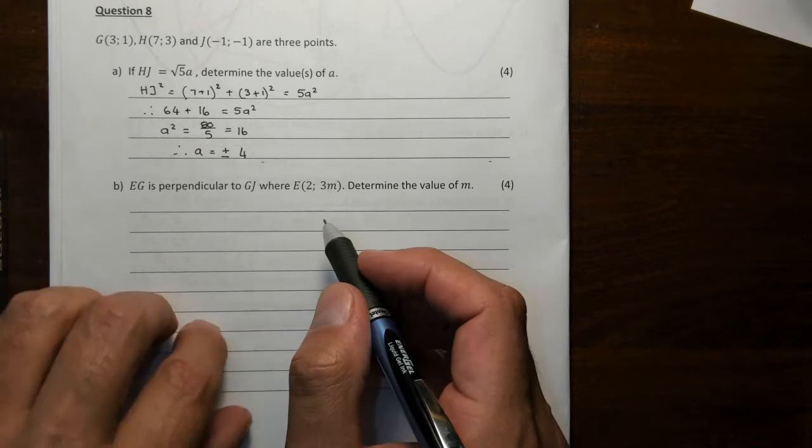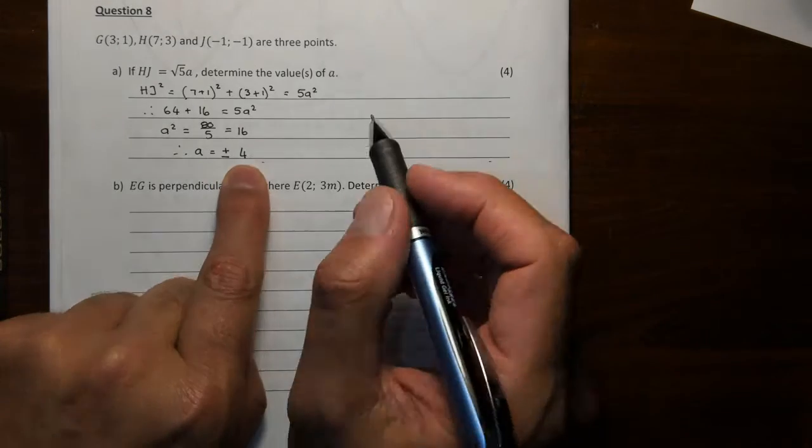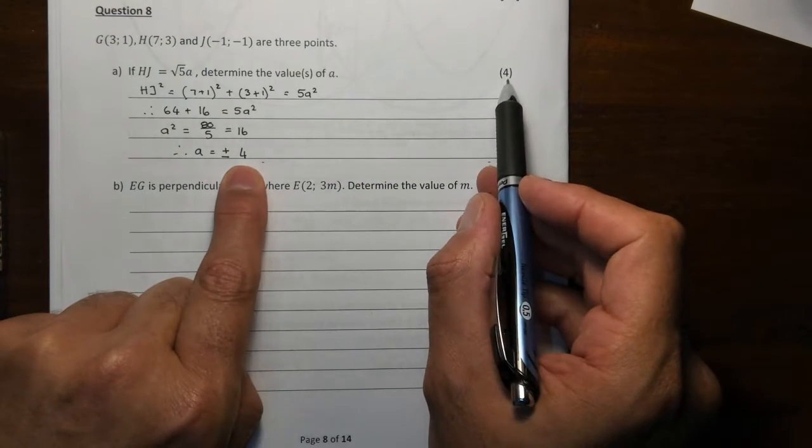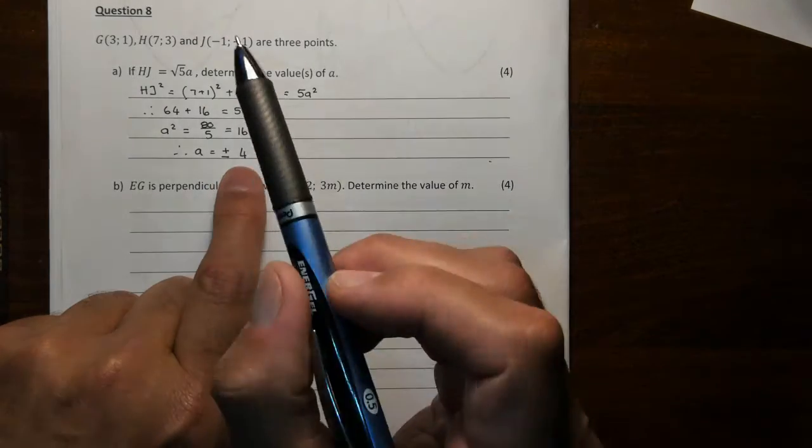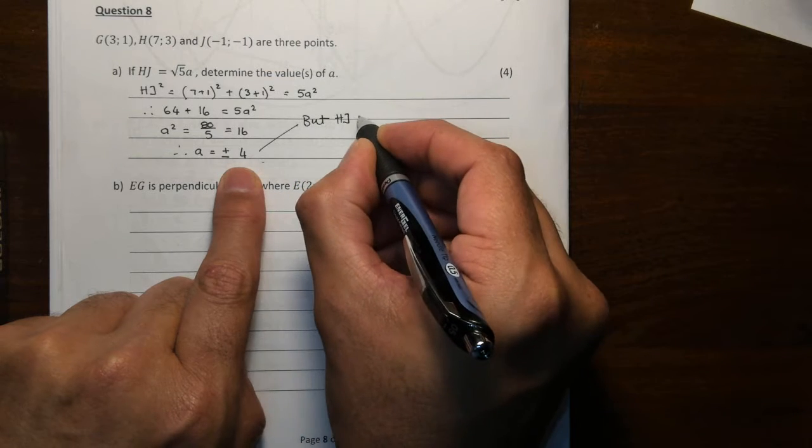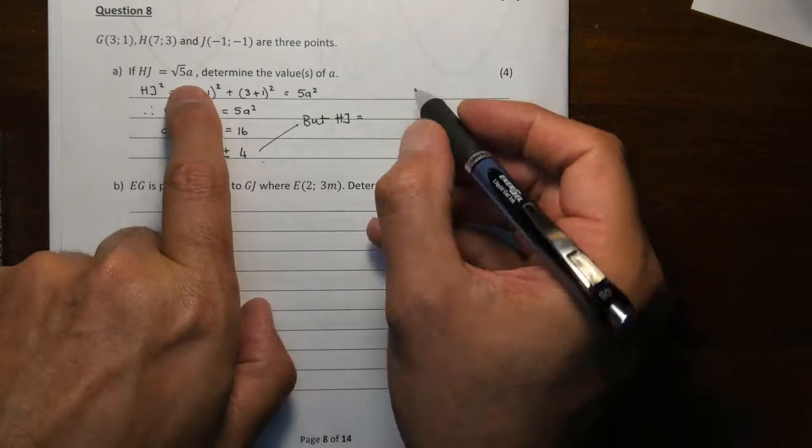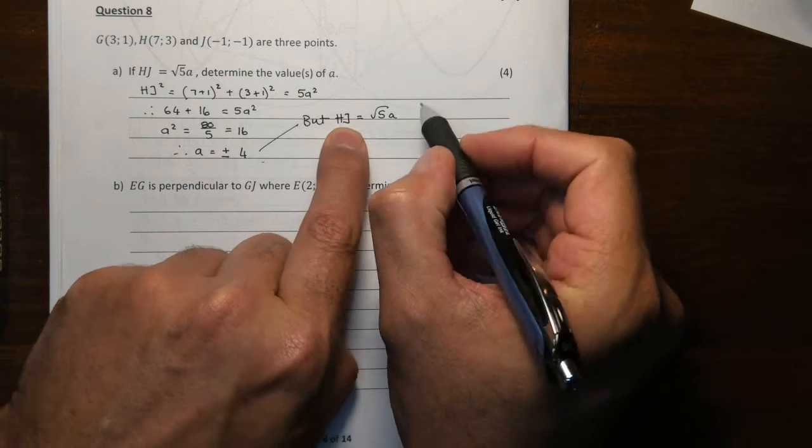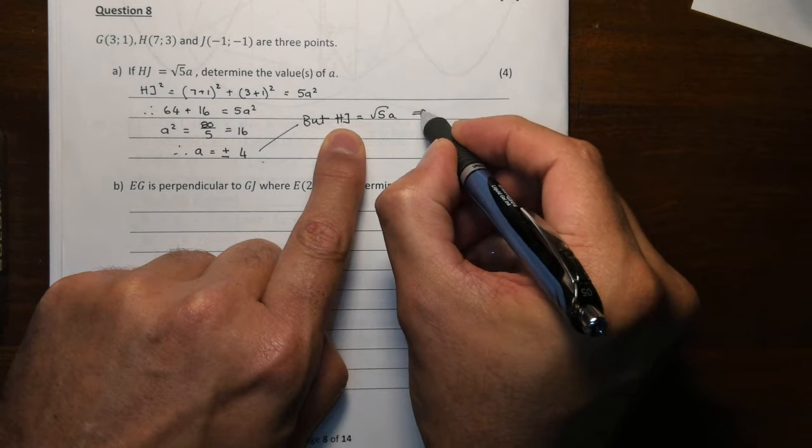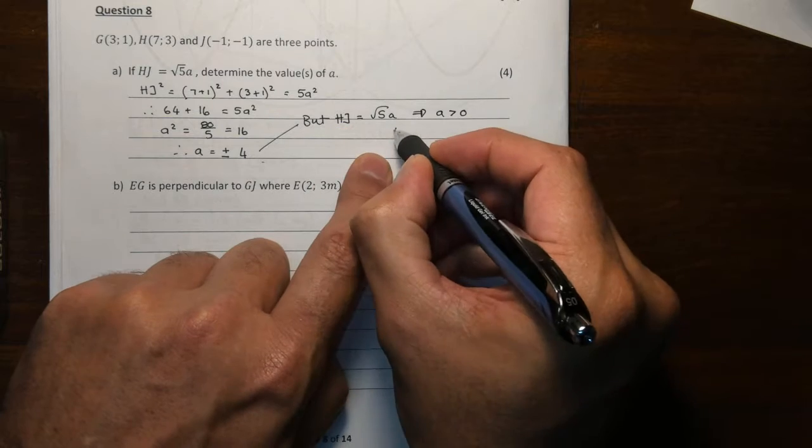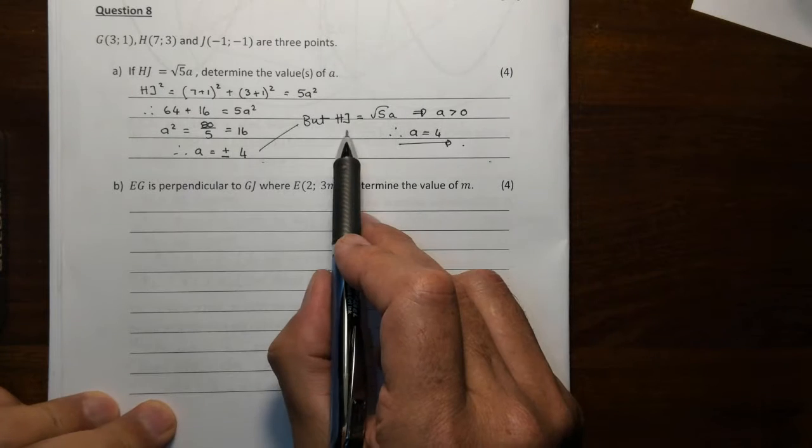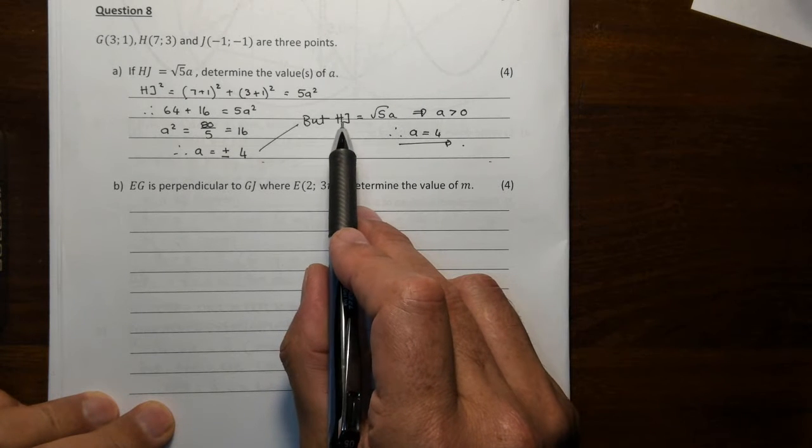This is 80, so A squared will be 80 divided by 5. And 80 divided by 5, we all know, is 16. Therefore, what is A? A can be plus or minus 4. Please notice that there's two possible values for A. But now, be careful. There's four marks. A can take on both values, but what did I give it to you as?